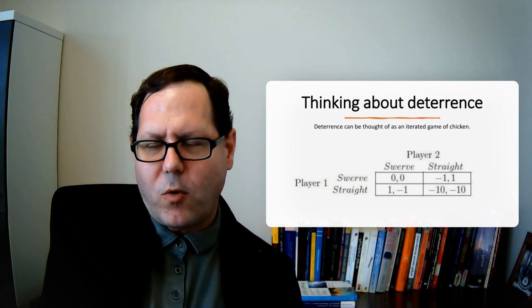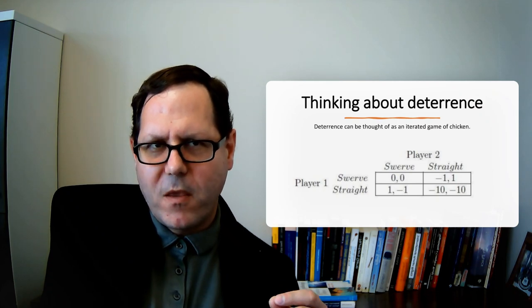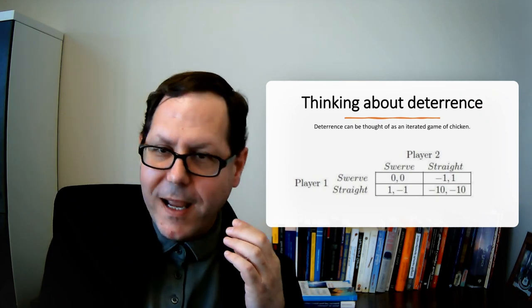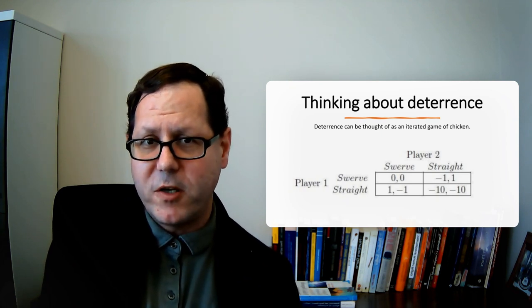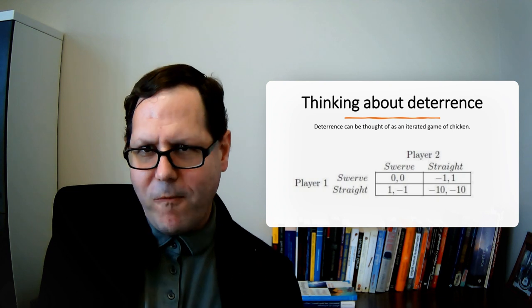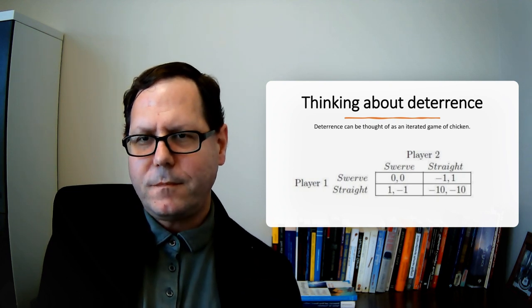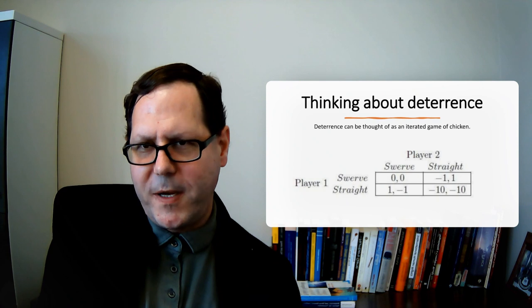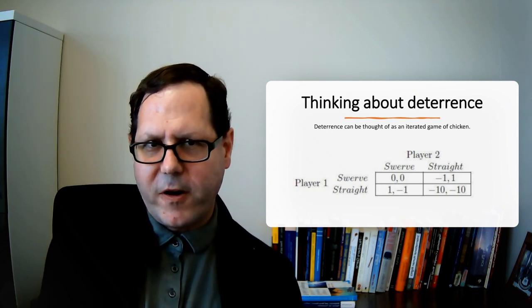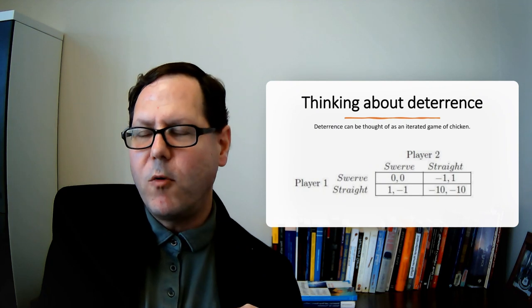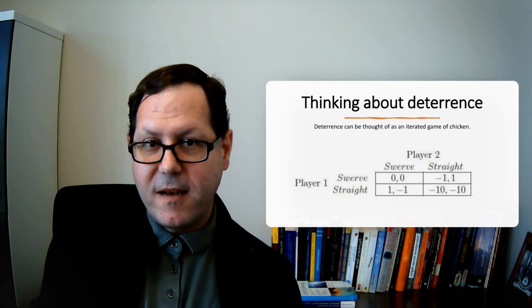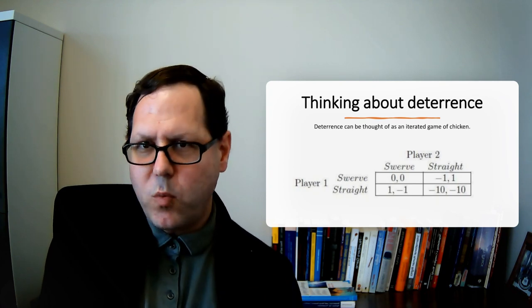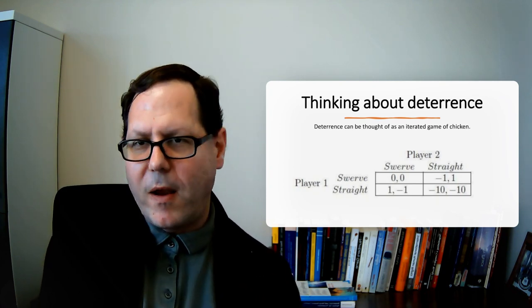As a story about deterrence and rational explanations of war, you're not playing this game once. You're playing this game over and over. The thinking is that if you develop a reputation for swerving, your adversary is going to feel safer going straight, knowing that they're going to get the one, you'll take the negative one, and that because you swerve, they're not going to have to worry about crashing.